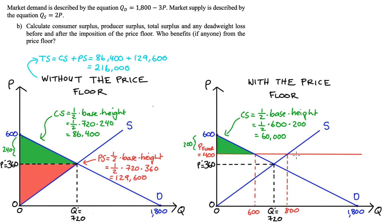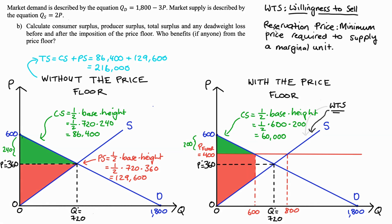Producer surplus is the area above the supply curve and below the price over the units traded. One interpretation of the supply curve is that it tracks willingness to sell — the minimum price a supplier needs to supply each marginal unit. Producer surplus sums the difference between the price received and the willingness to sell for each unit produced and traded.